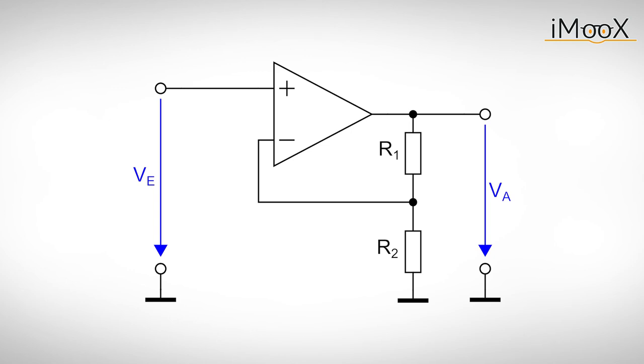As an example, consider this amplifier circuit. We want to know how the output voltage depends on the input voltage.